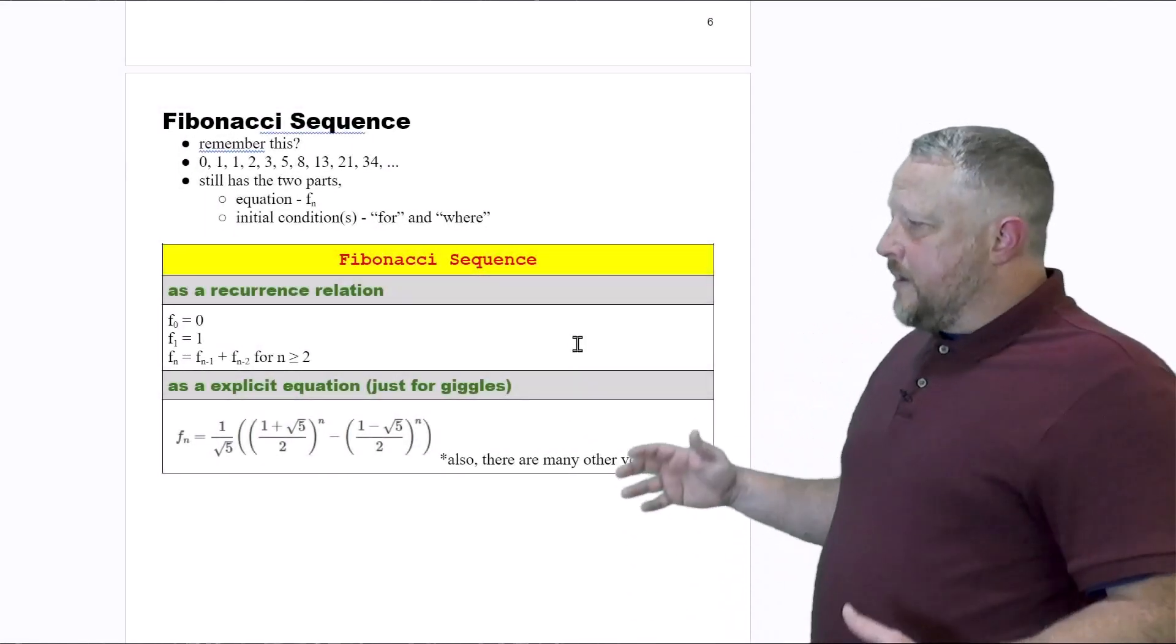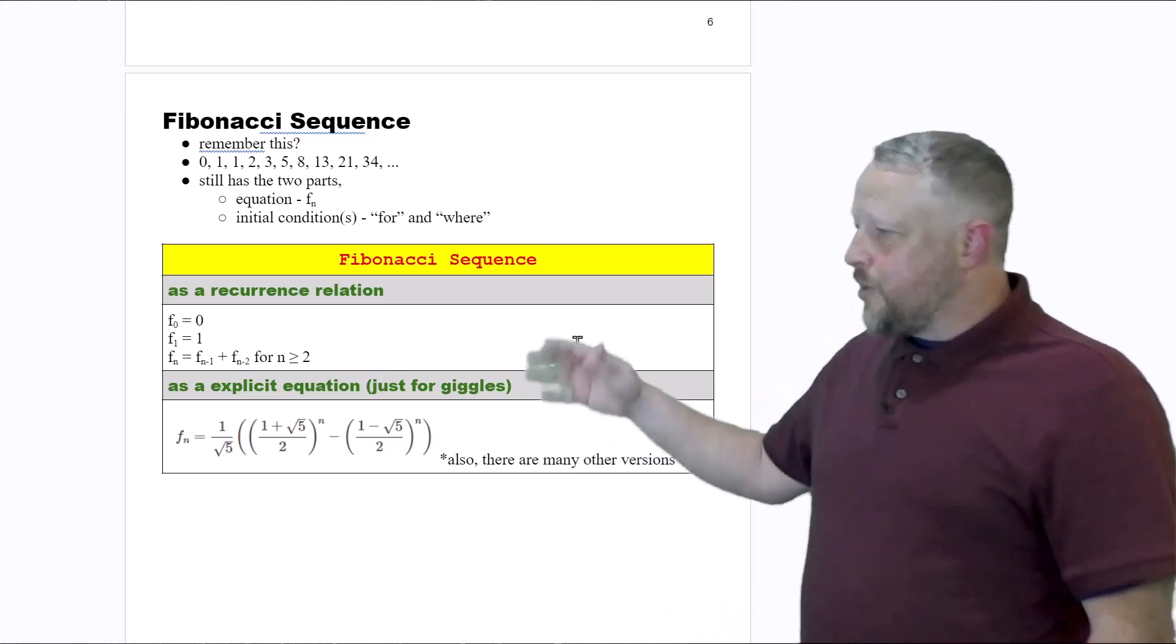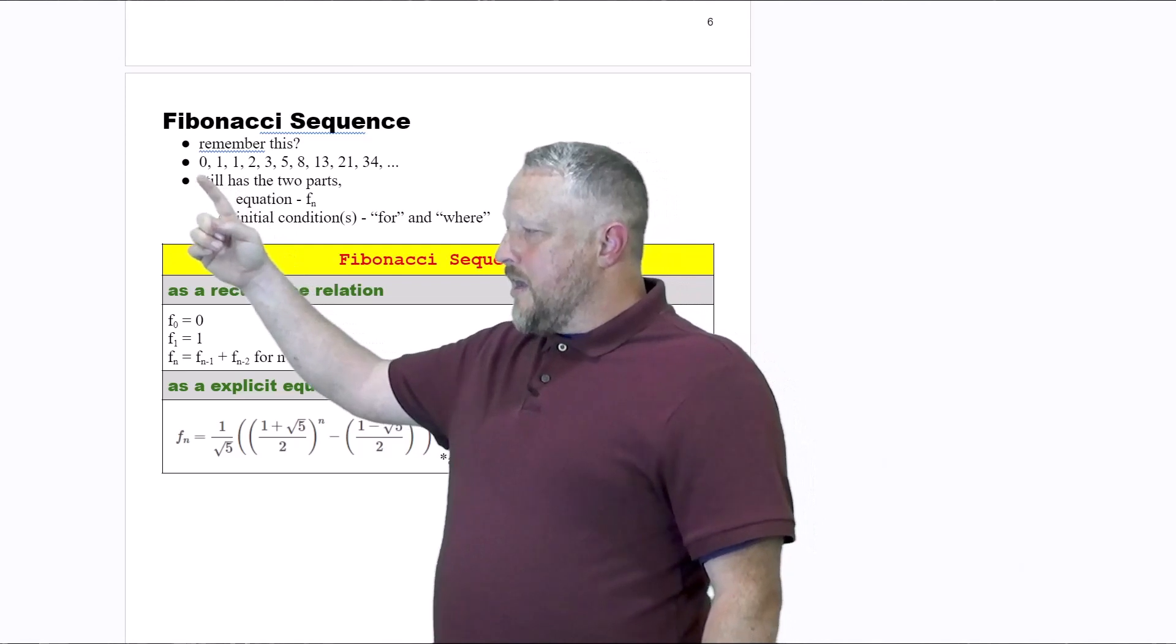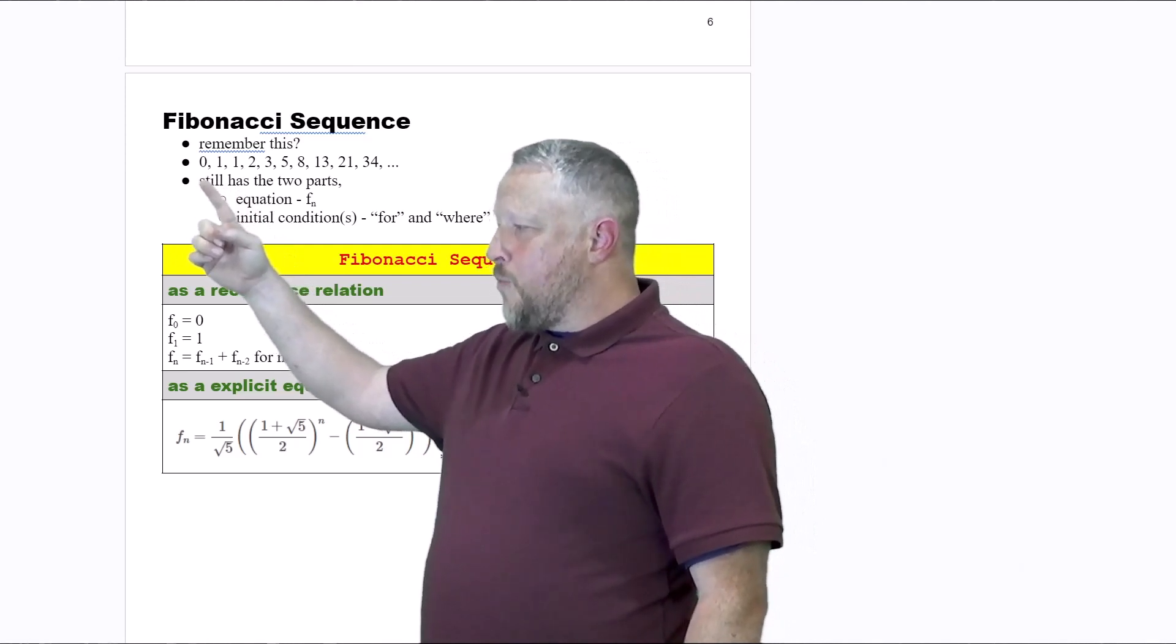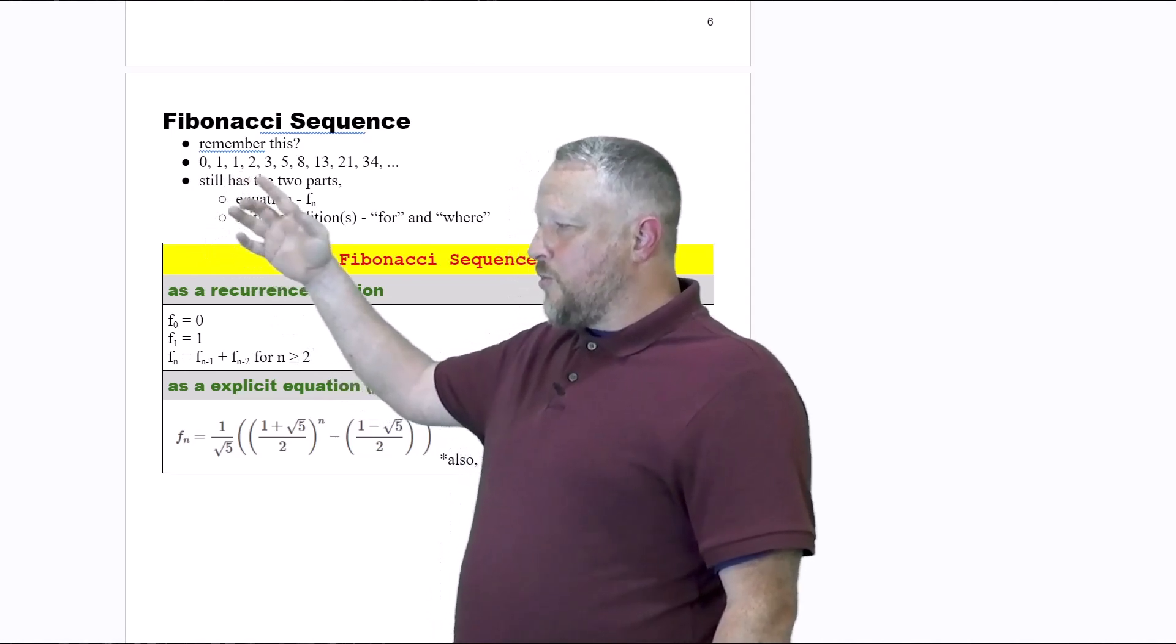To follow along with that, you've seen Fibonacci before in early programming. You know the Fibonacci sequence is going to be 0 plus 1 equals 1, then 1 plus 1 equals 2, and then we move on from there.